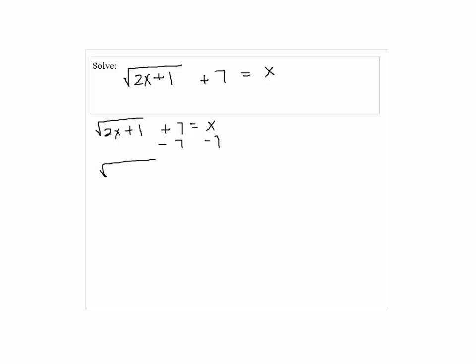We subtract 7 from both sides. So we have x minus 7.